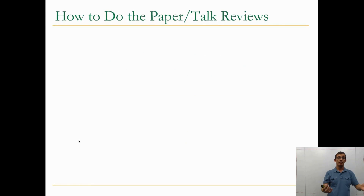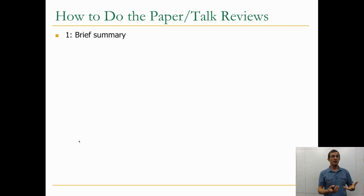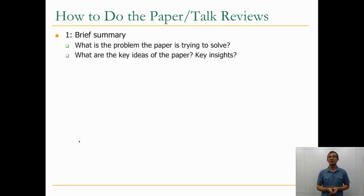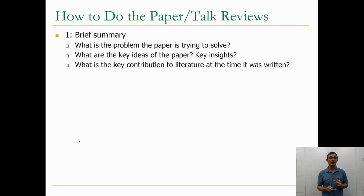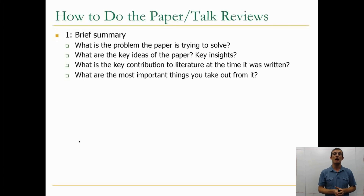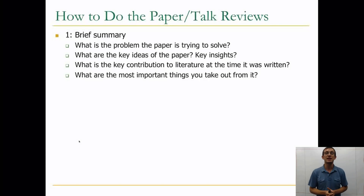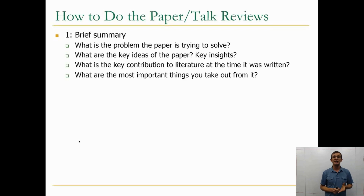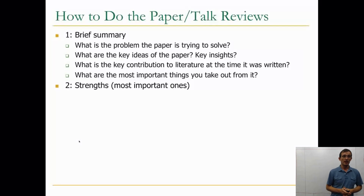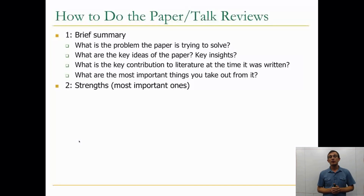Here's an outline of a good review. First, a good review will start with a brief summary of the paper: what is the problem the paper is trying to solve, what are the key ideas, what are the key insights, what is the key contribution to the literature at the time the paper was written, and what are the most important things you take away from it.